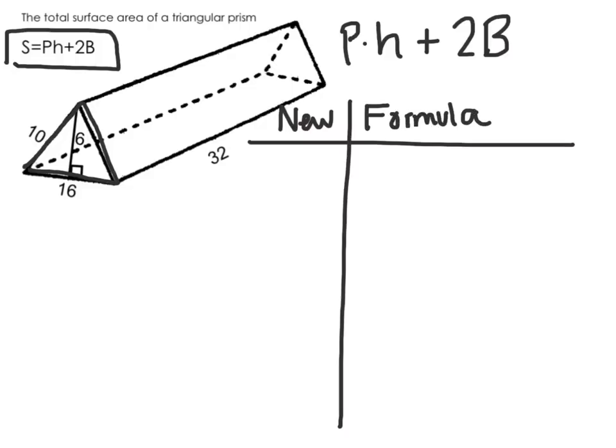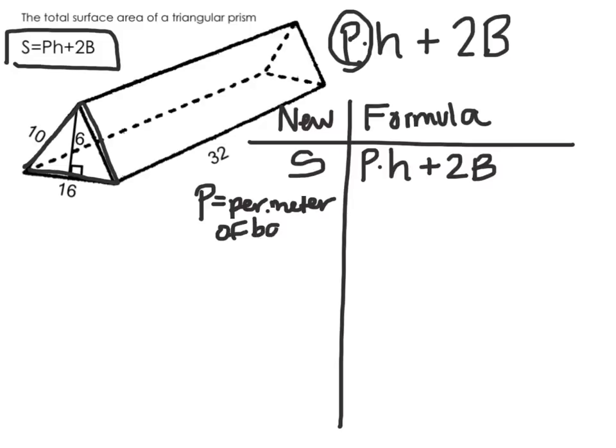So the first information I have, I know that S is equal to P times H plus 2 times capital B. Now I'm going to solve for capital P. Capital P is the perimeter of the base.